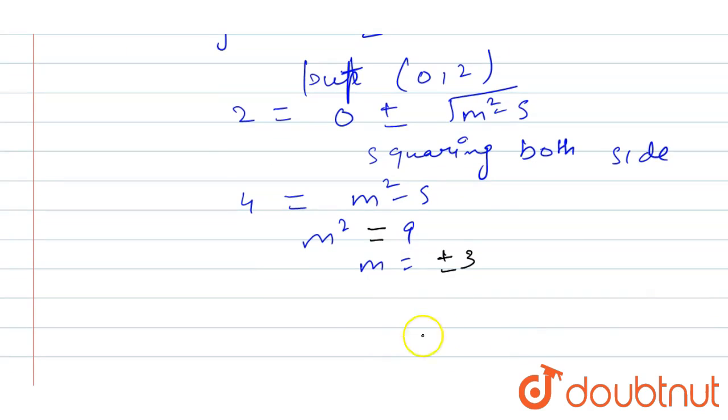Therefore, the slope of the tangent is m = ±3.